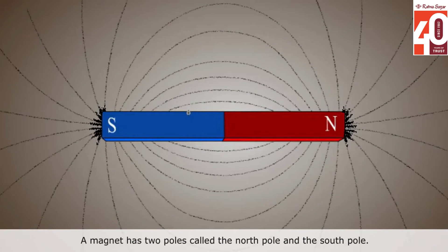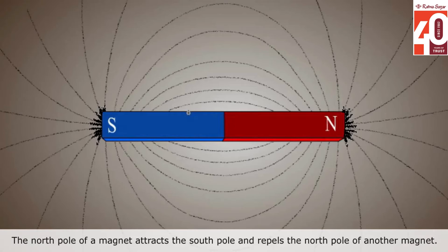A magnet has two poles called the North Pole and the South Pole. The North Pole of a magnet attracts the South Pole and repels the North Pole of another magnet.